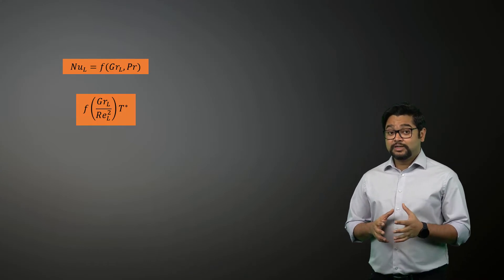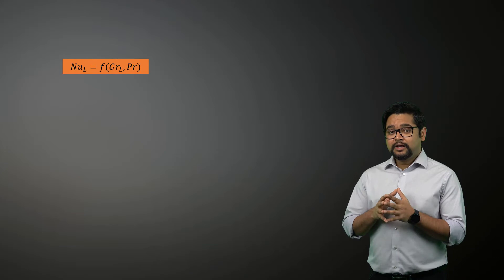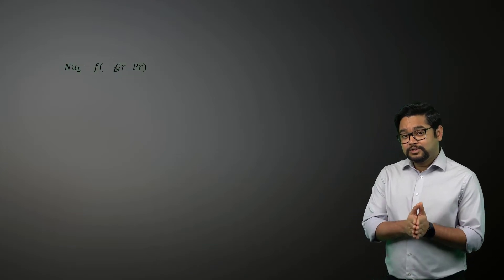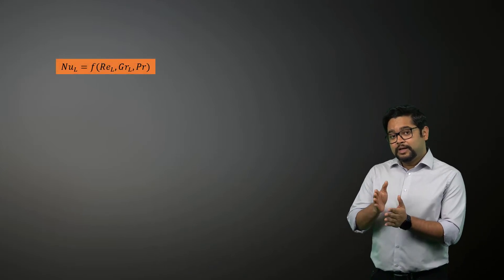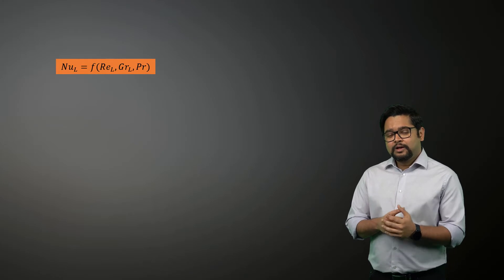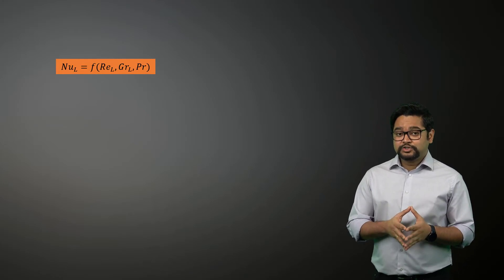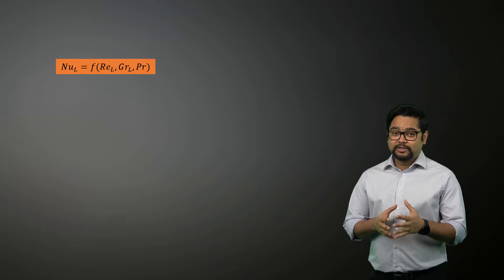For such cases, the resulting Nusselt number correlations are now a function of the Reynolds number, Grashof number, and the Prandtl number. Now, depending on the values of this ratio, we can have the following three conditions.